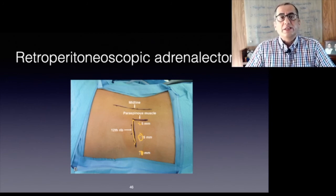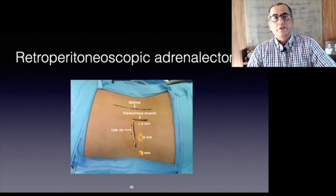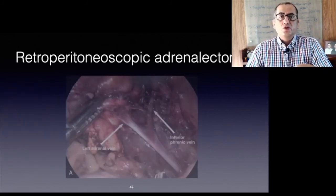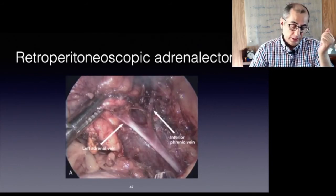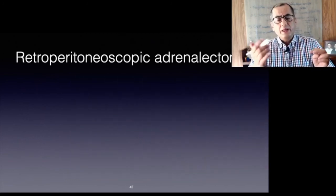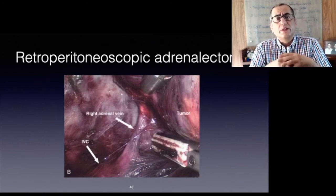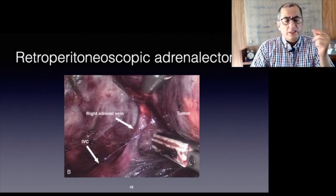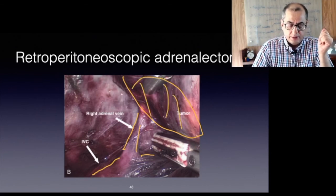The left adrenal vein is usually located at the medial inferior pole of the adrenal gland. The right adrenal vein is covered by the retrocaval posterior aspect of the adrenal gland. The adrenal vein, the IVC, and the tumor can all be clearly visualized in this approach.